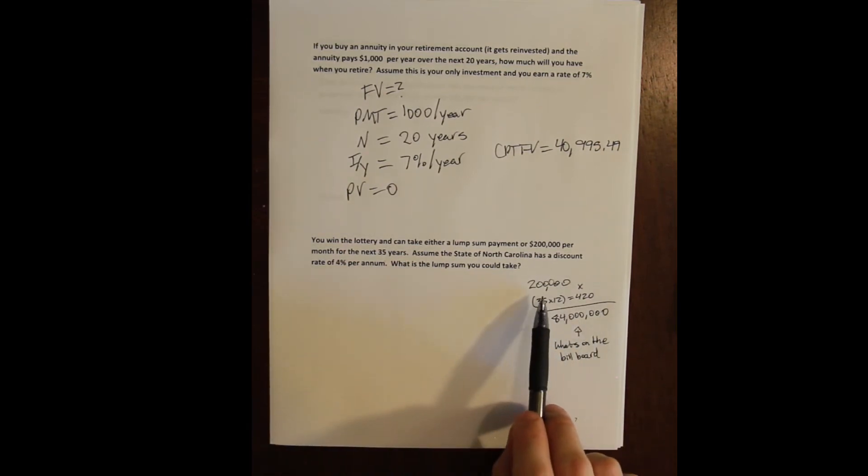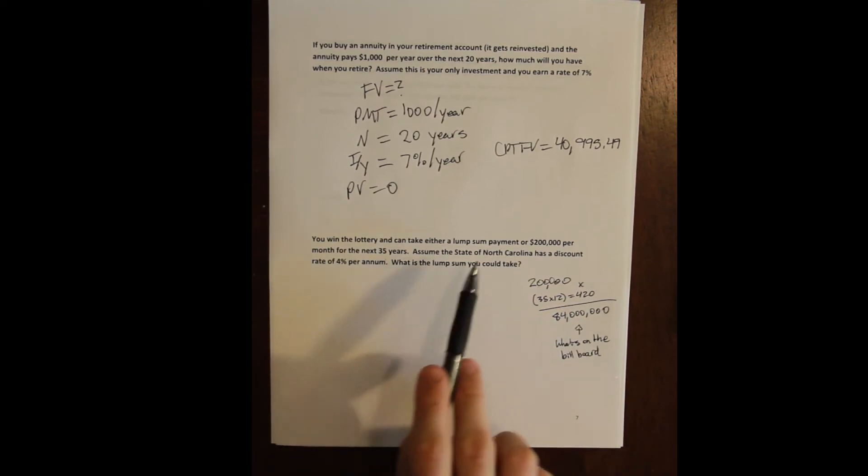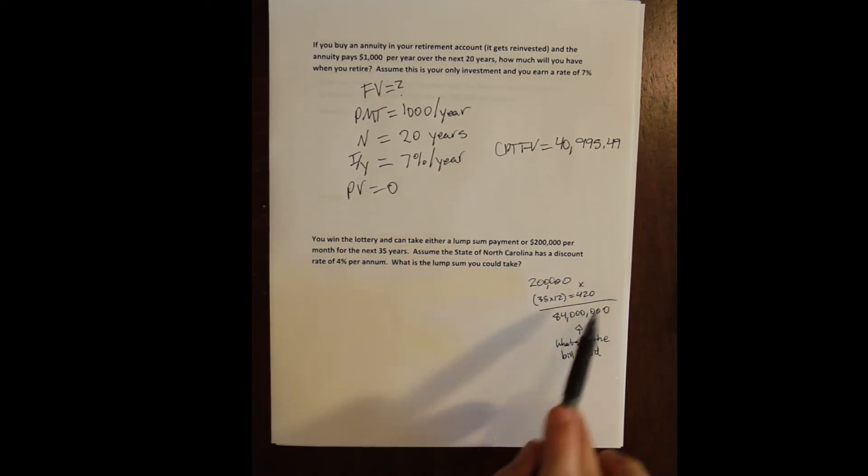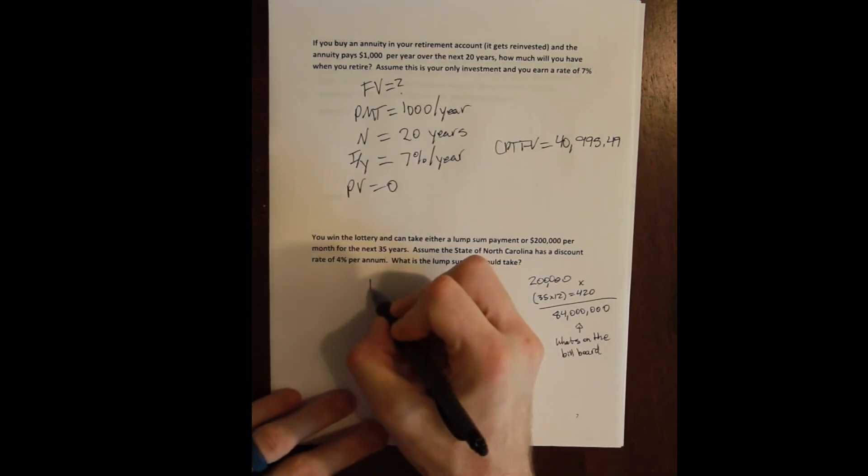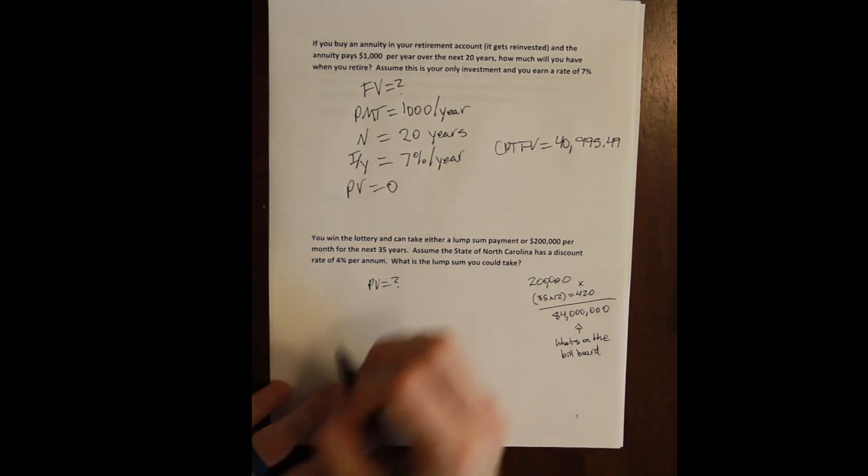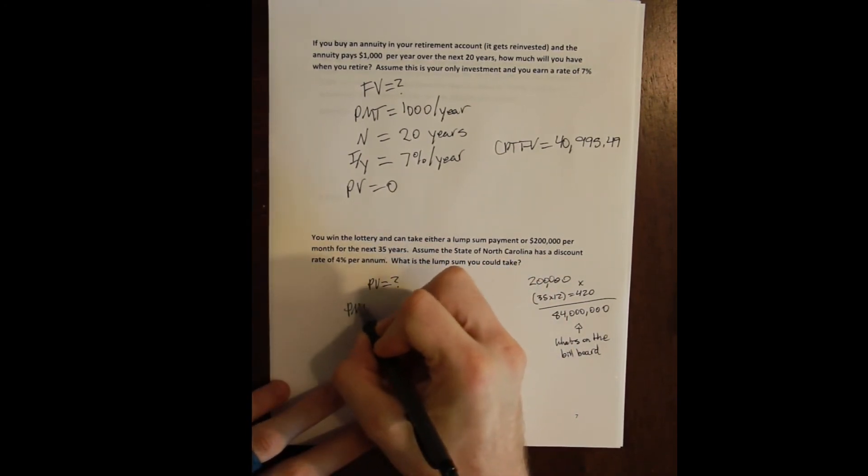You are either going to win the annuity that pays you $200,000 for 420 months, or you're offered the lump sum, which is the present value of this annuity. So your choice when you win the lottery is either this annuity or the present value of this annuity.